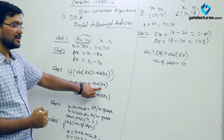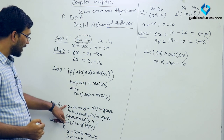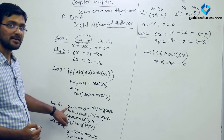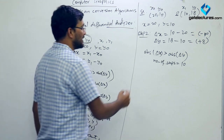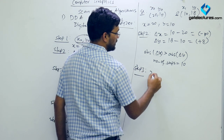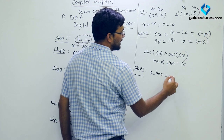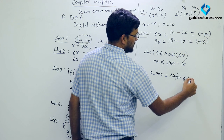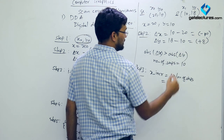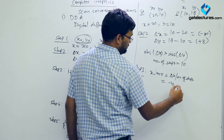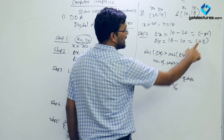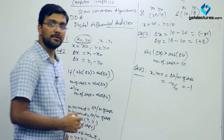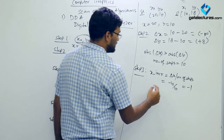Step 4 is to compute the X increment factor and Y increment factor. The X increment factor = DX / number of steps = −10 / 10 = −1.